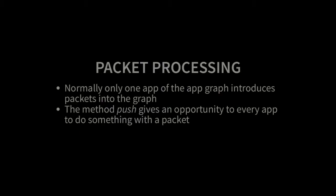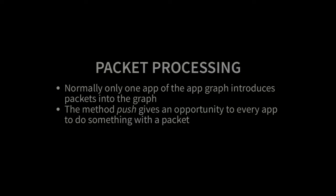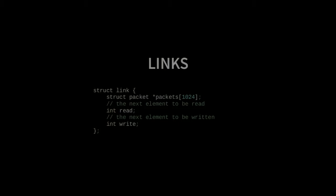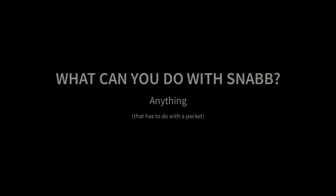As a summary, in SNAP there are two things to keep in mind. Usually there's only one app that introduces packets into the graph — I call this the originator app. These are apps such as a driver that reads packets from the NIC, a pcap reader that reads from a file, or an app that builds packets on the fly. All other apps implement a push method, which gives them the opportunity to do something with the packet. A packet in SNAP is a simple data structure — an array of bytes, 10KB, with a length field. A link is a ring buffer of 1,000 packets with read and write pointers.